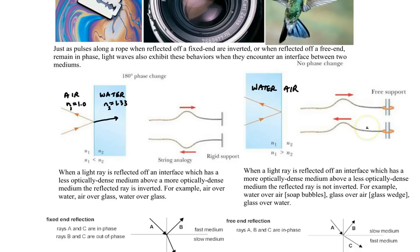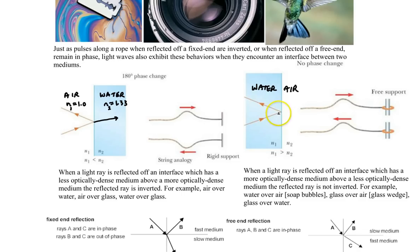Just like when you look in a mirror you see a reversal of words, but with an internal reflection inside water you wouldn't see a reversal of letters on a shirt, for example.